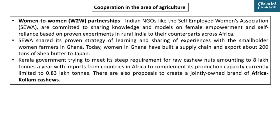There has been a very important women-to-women partnership in agriculture. India's NGO, the Self-Employed Women's Association (SEWA), has proven committed to sharing knowledge and models of development on female empowerment and self-reliance. SEWA helped women farmers in Ghana learn to produce shea butter; those women built a supply chain and now export around 200 tons of shea butter to Japan. Sub-national cooperation is also notable — Kerala government imports raw cashew nuts from Africa to meet its steep requirement of around 8 lakh tons per year, as Kerala's own production is only about 0.83 lakh tons.